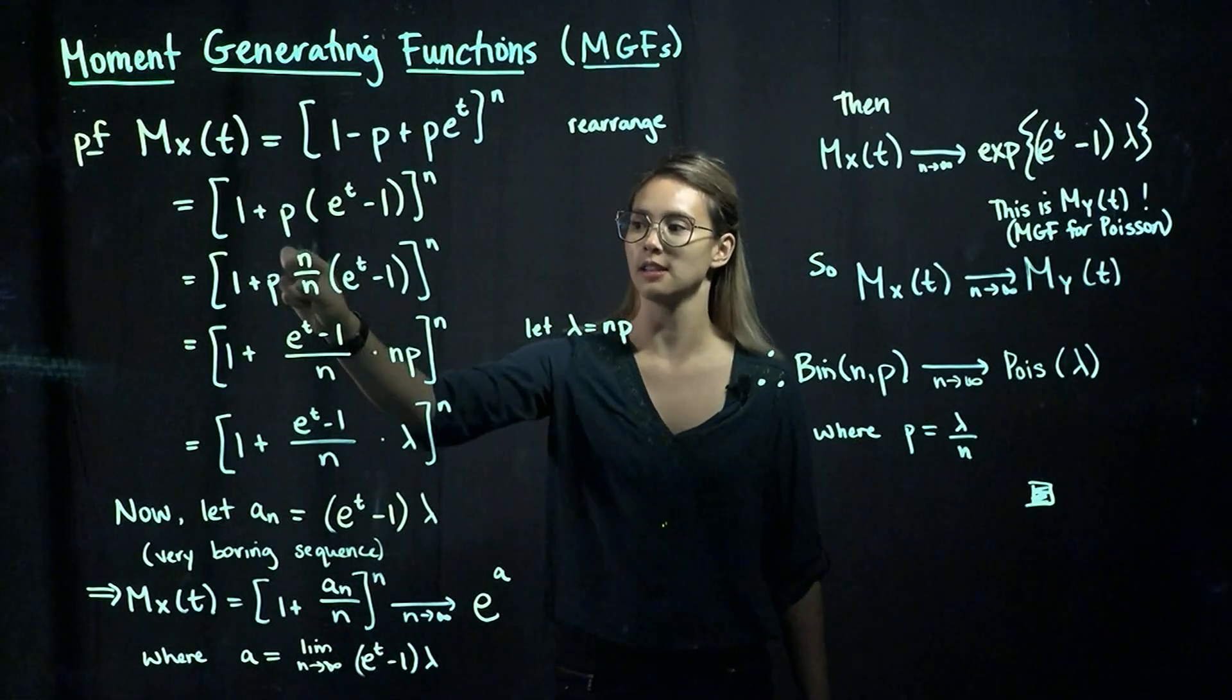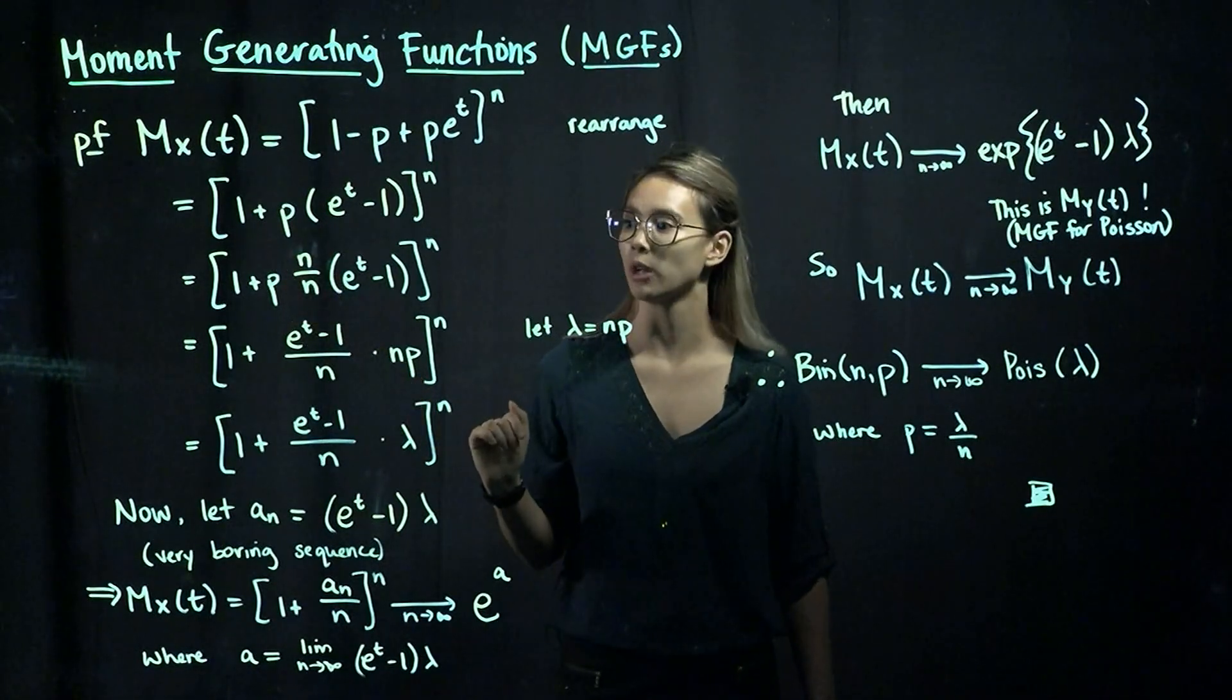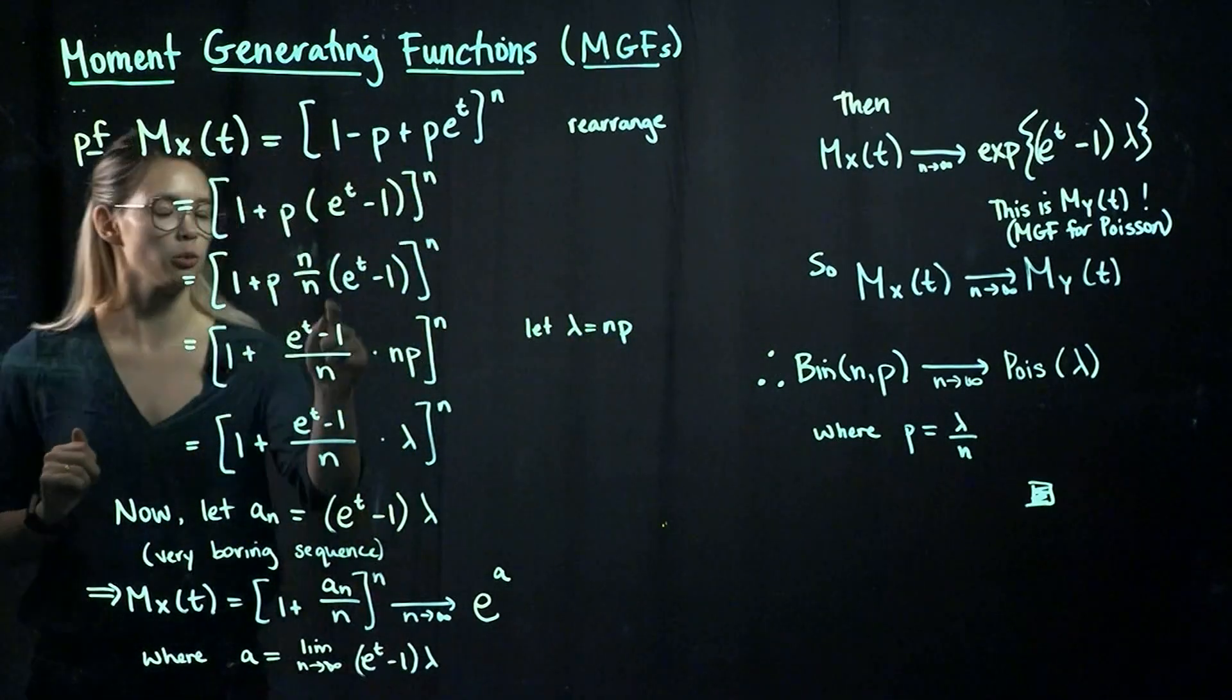And next step, we're just going to multiply n over n. So that's fair. We can multiply by 1, no big deal there.